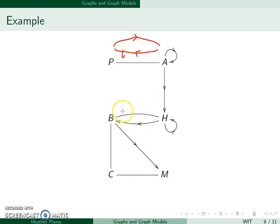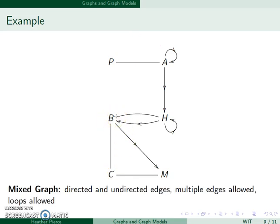For instance here, this indicates there is a flight from Boston to Hartford and from Hartford to Boston. The additional directed edge tells us there is a second flight from Hartford to Boston. There is a flight from Boston to Concord and from Concord to Boston. This is called a mixed graph because it has both directed and undirected edges. We allow multiple edges and loops.